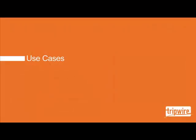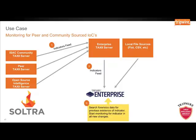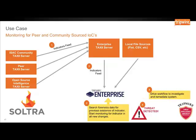We will now go through a few use cases on how threat intelligence can be integrated into Tripwire. In this use case, we use community-sourced indicators of compromise from partners such as Sultra. Indicator feeds are fed into an internal TAXII server hosted on the Tripwire Enterprise console. Scans can then be initiated against stored data from previous scans as well as monitor for new indicators or threats in new changes. As soon as a threat is detected, Tripwire will drive a workflow to assist the user to investigate and remediate the compromised system.